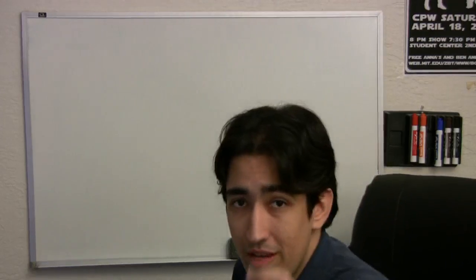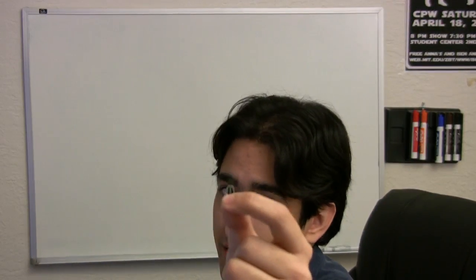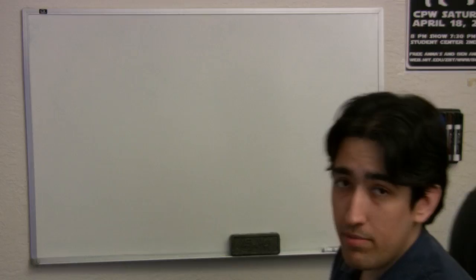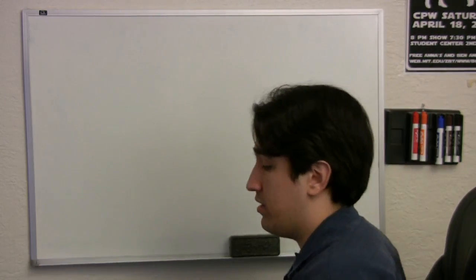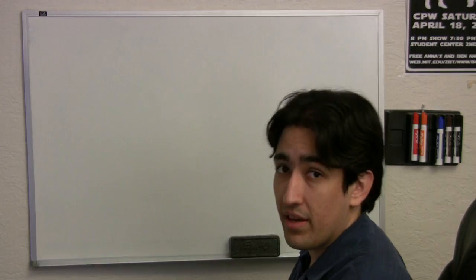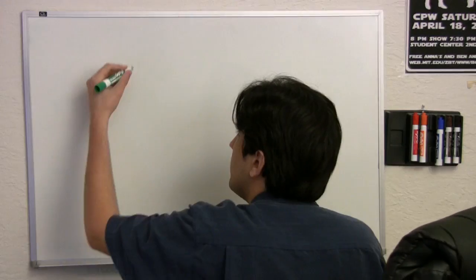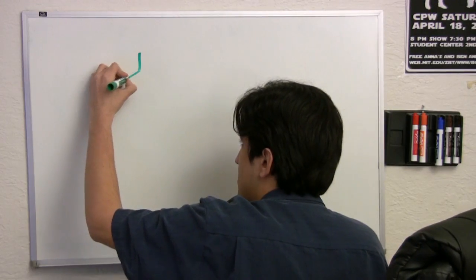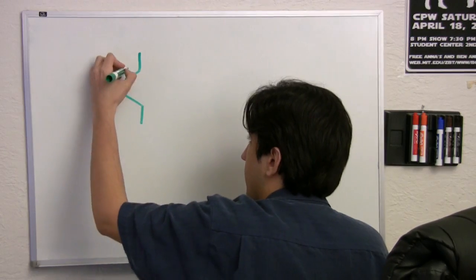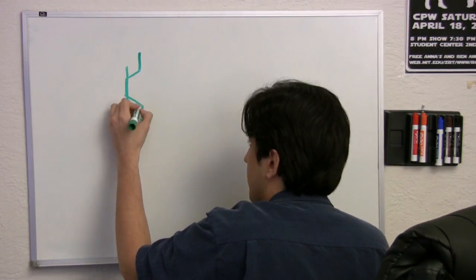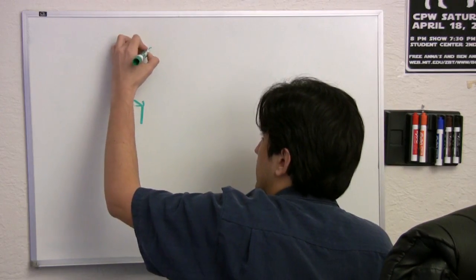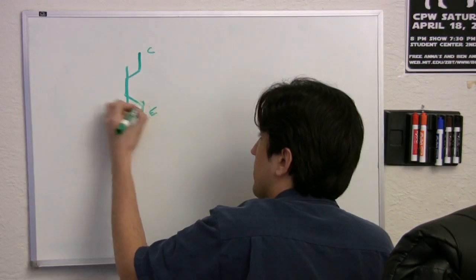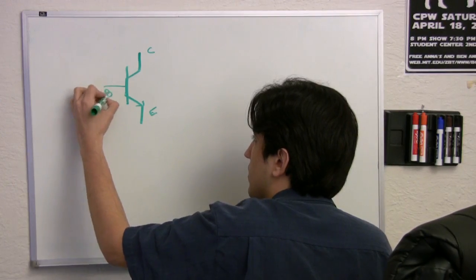Okay, so we have this little guy, which is a bipolar junction transistor, which is what we want to make our amplifier out of. And the first thing we need to do is build a mathematical model of how this guy works, so we can make a circuit out of it. So, let's build that mathematical model. This is the way we draw the schematic for the bipolar junction transistor, and it has three terminals. It has a collector, an emitter, and a base.